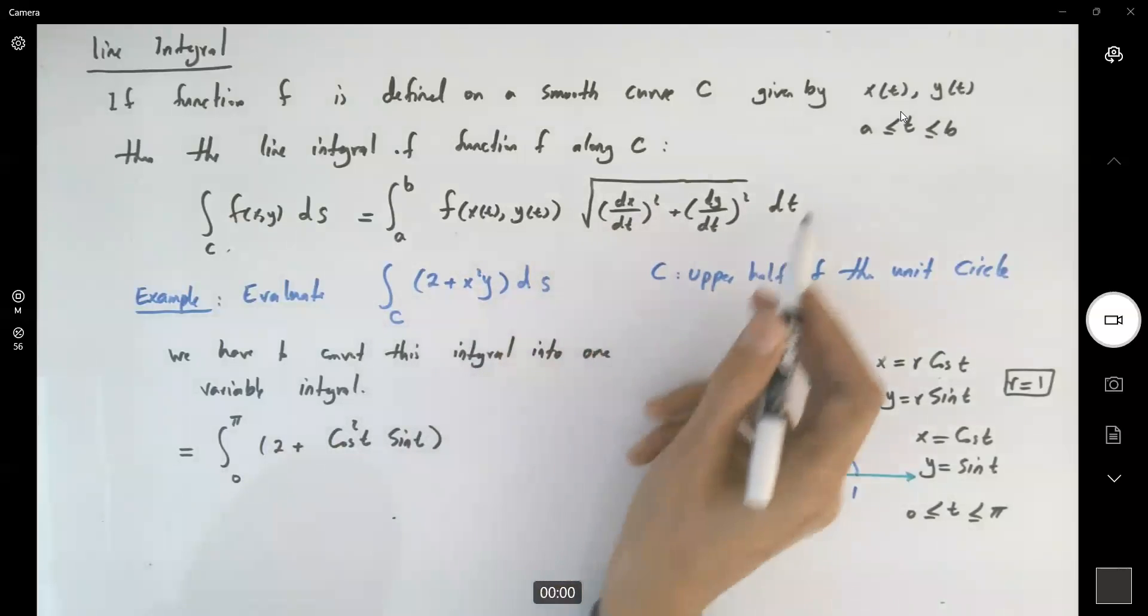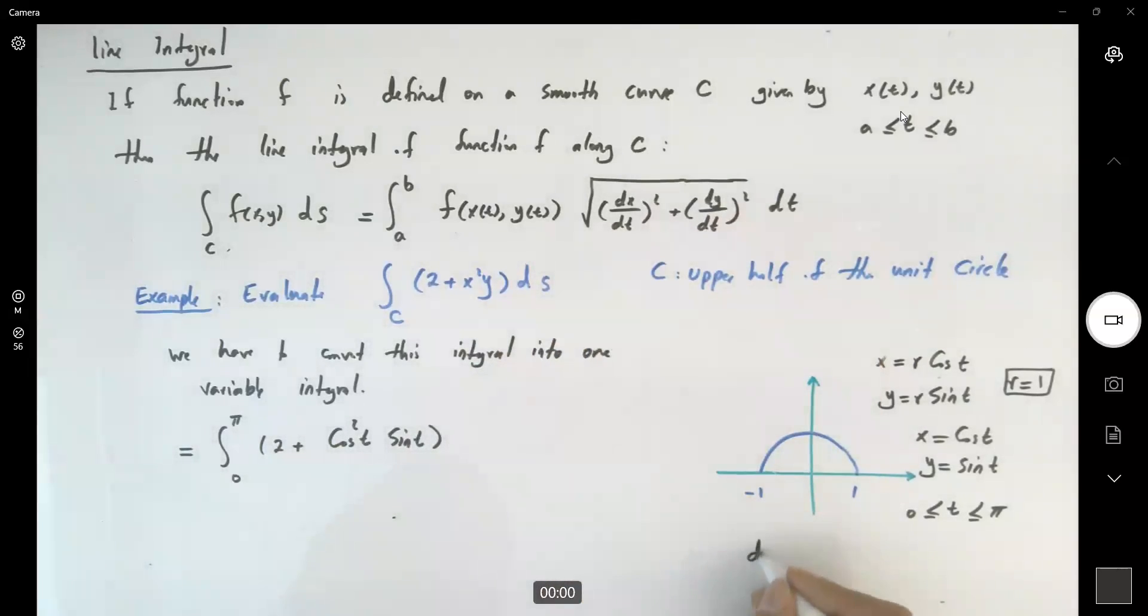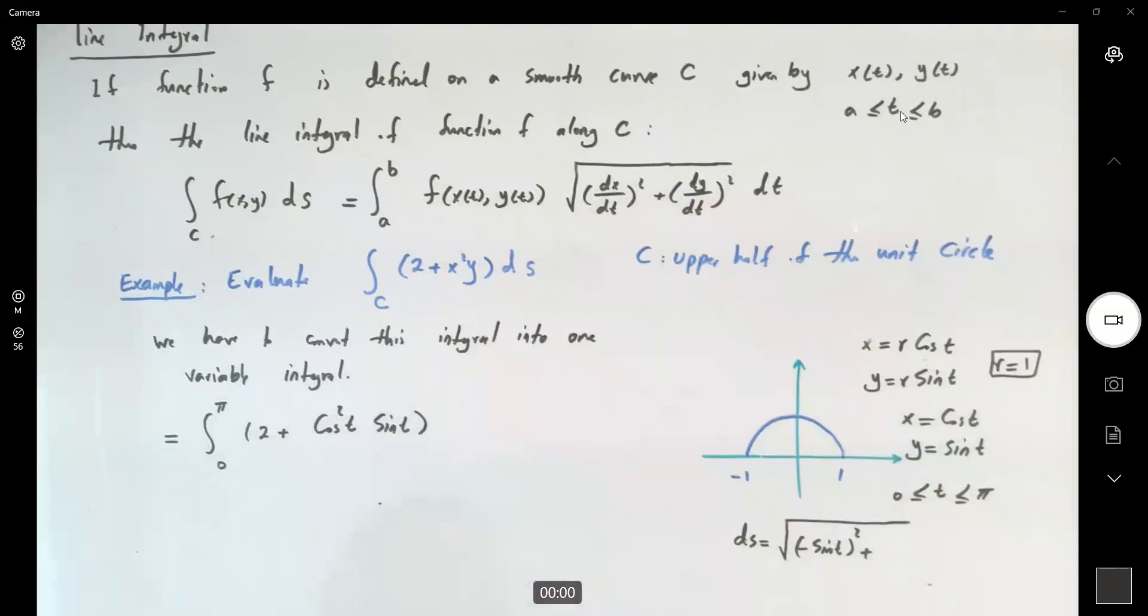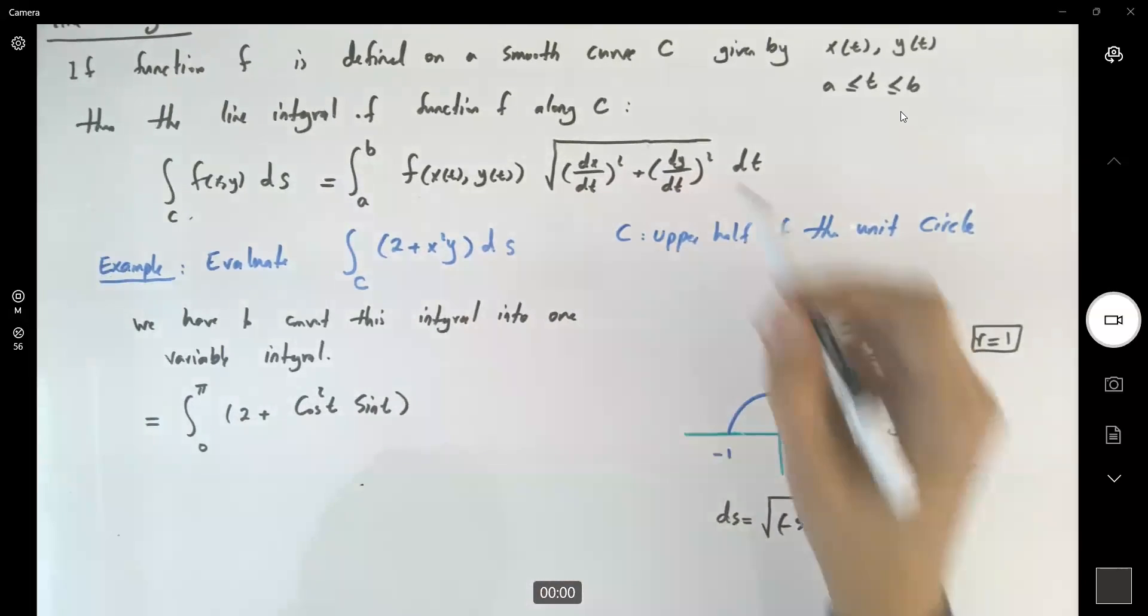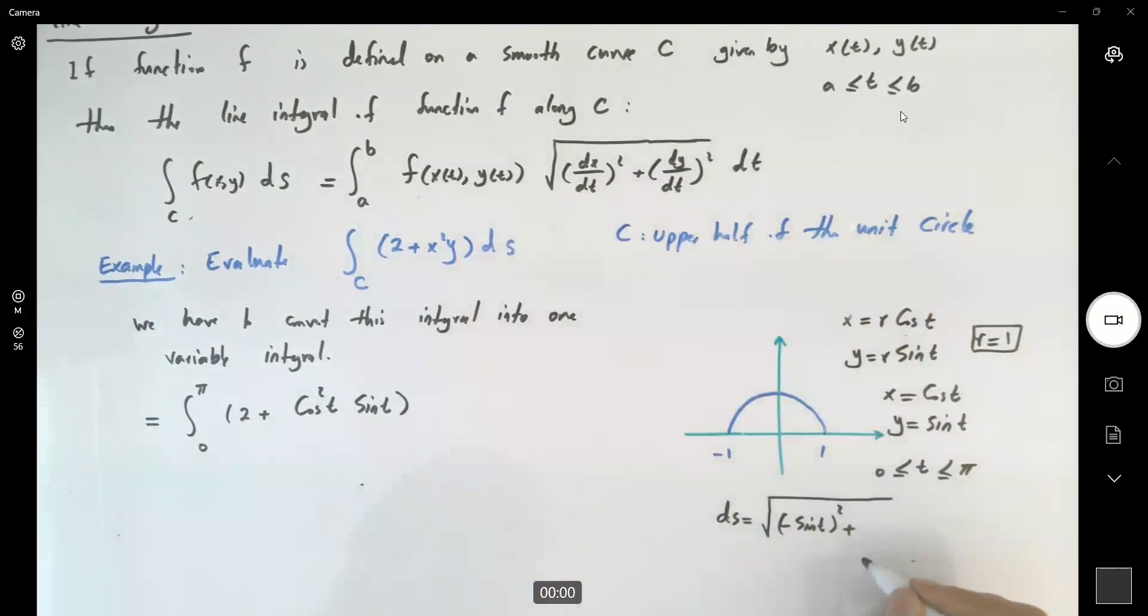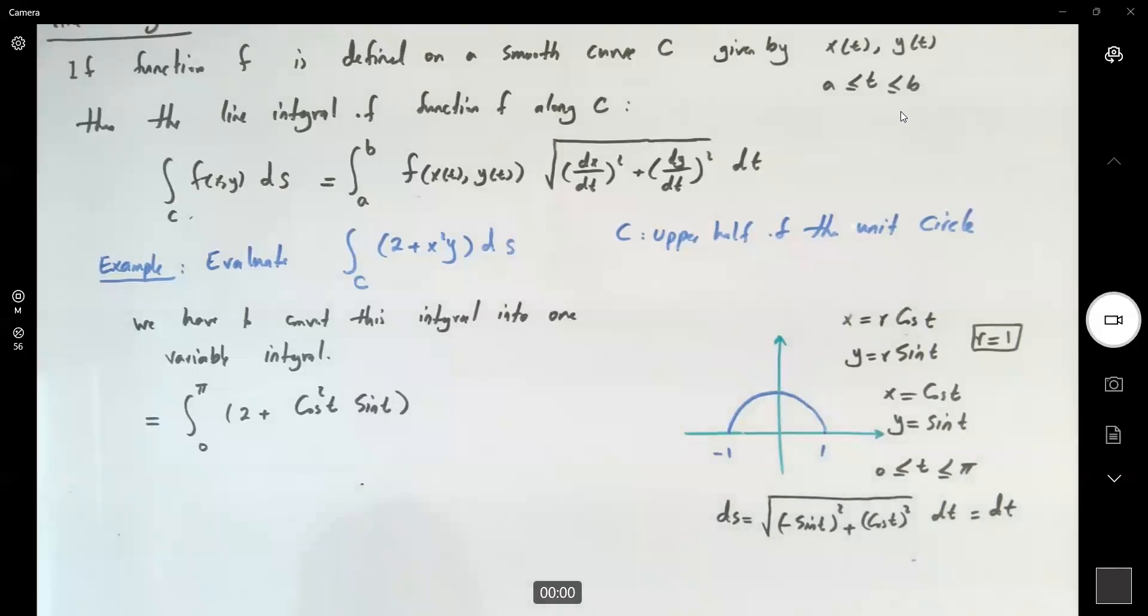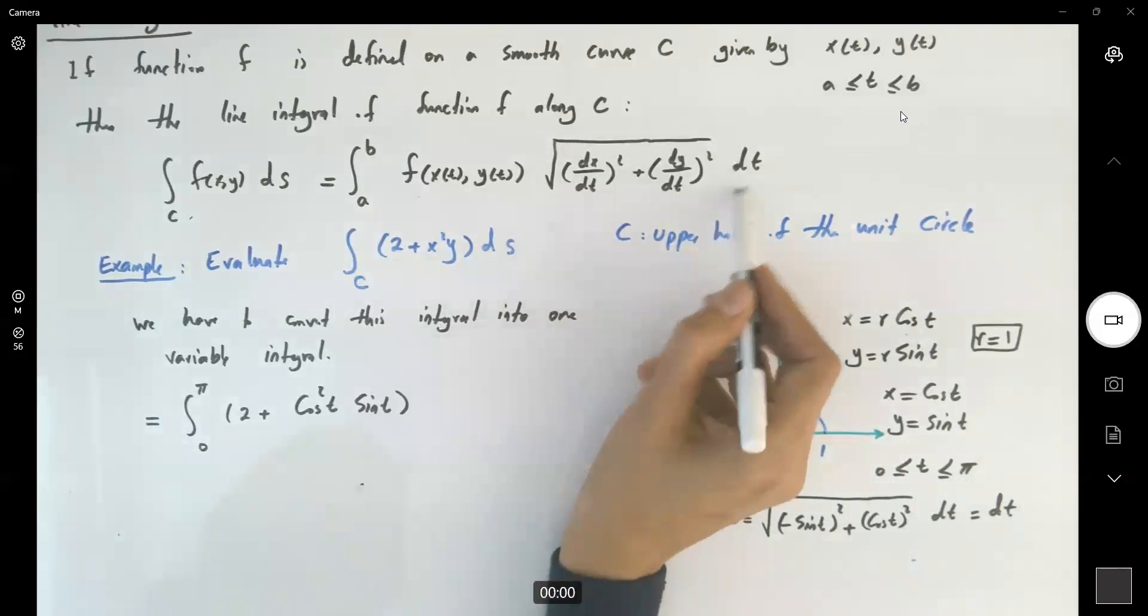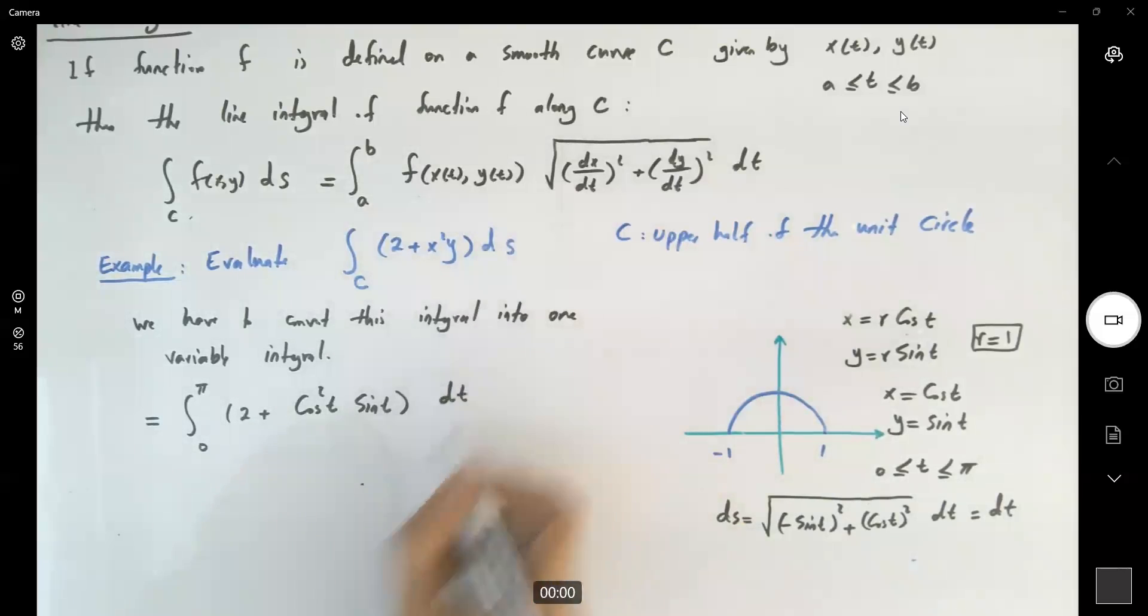How do we define ds? ds is the square root of dx dt negative sine t squared plus dy dt, which is cosine t squared dt. This guy is just one. So ds is equal to dt. So this guy becomes dt.